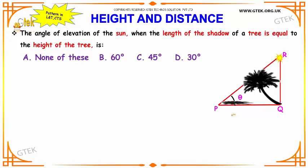Let us see our next interesting example. The angle of elevation of the sun when the length of the shadow of the tree is equal to the height of the tree.